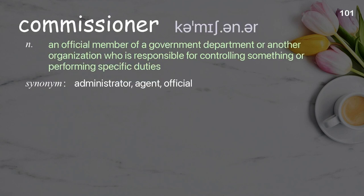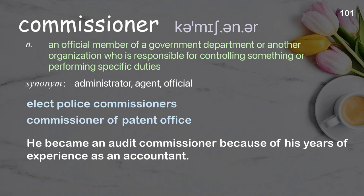Commissioner: an official member of a government department or another organization who is responsible for controlling something or performing specific duties. Examples: elect police commissioners, commissioner of the patent office. He became an audit commissioner because of his years of experience as an accountant.